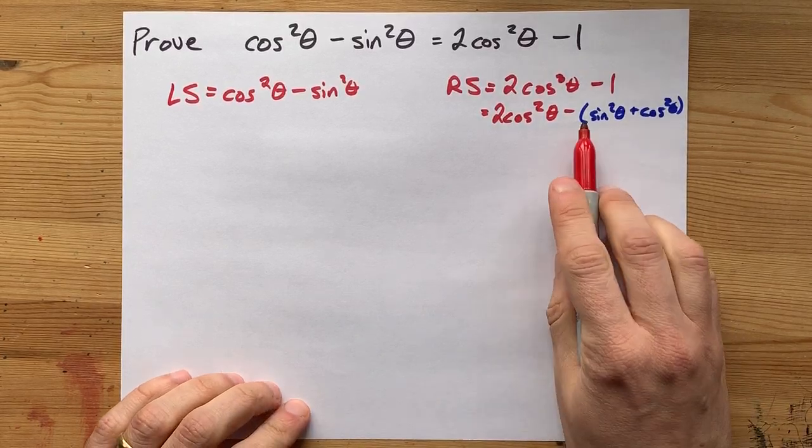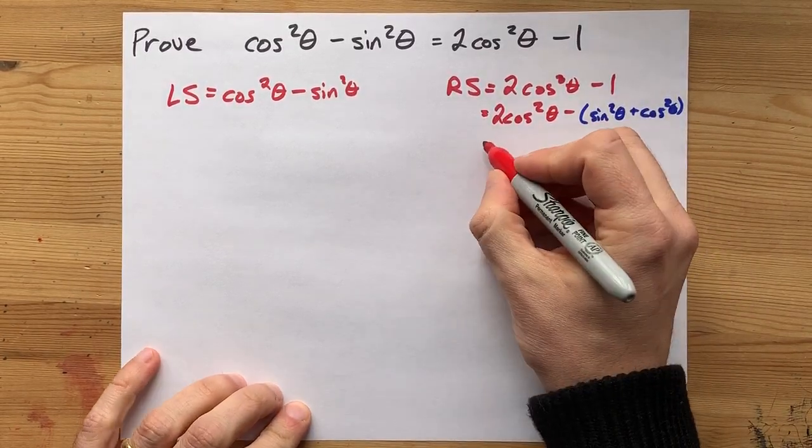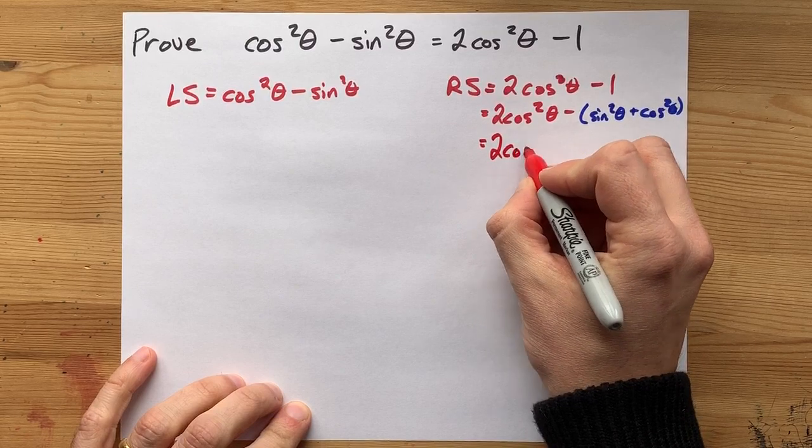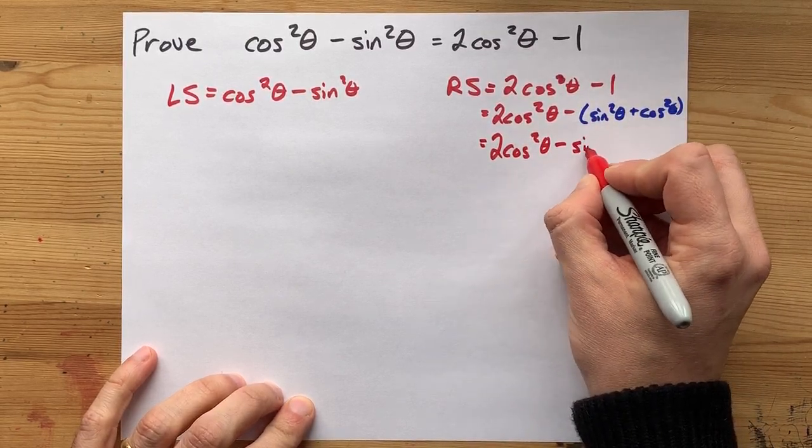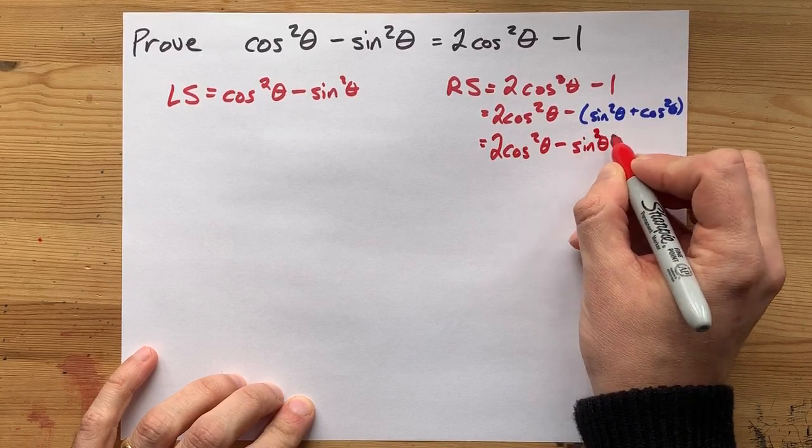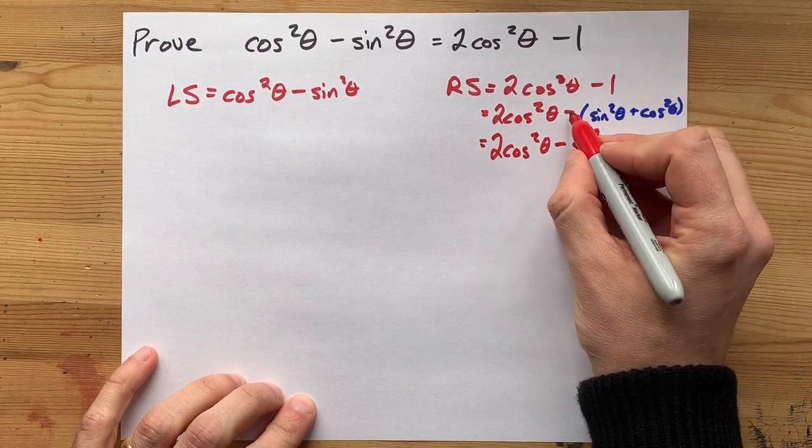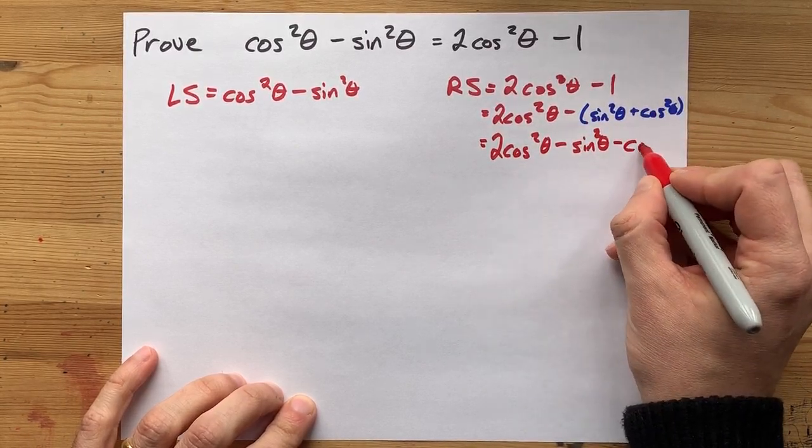Now, I'm minusing everything that's in the bracket here, so let's rewrite the two cos squared theta. I'm minusing a sine squared theta, and I'm minusing a cos squared theta as well.